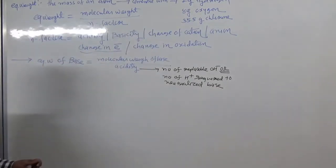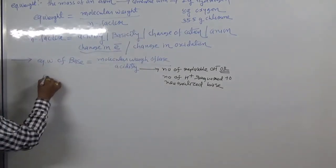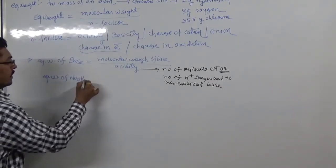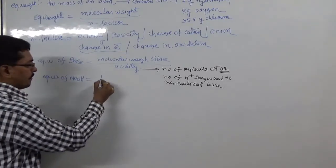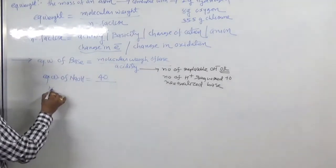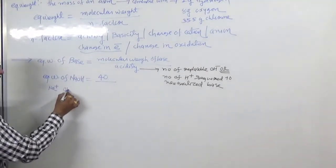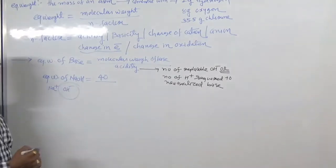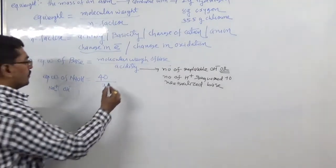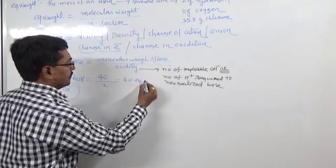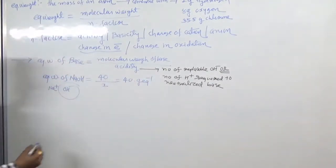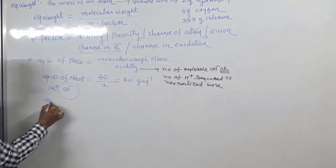For example, sodium hydroxide (NaOH) has a molecular weight of 40. In solution it gives Na⁺ and OH⁻, so the replaceable hydroxyl ion is just one. Acidity is one, so 40 divided by 1 gives an equivalent weight of 40 gram equivalent for NaOH.